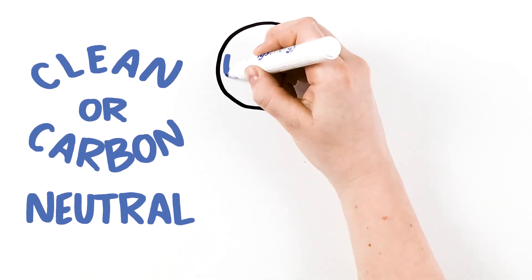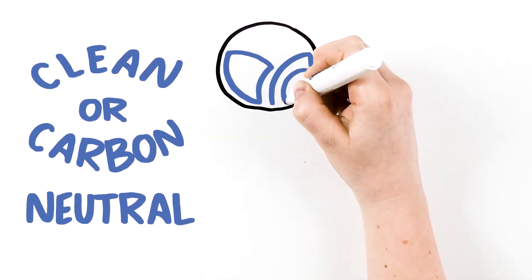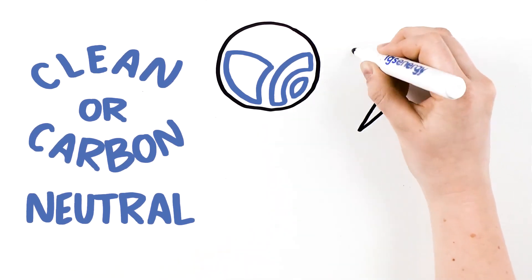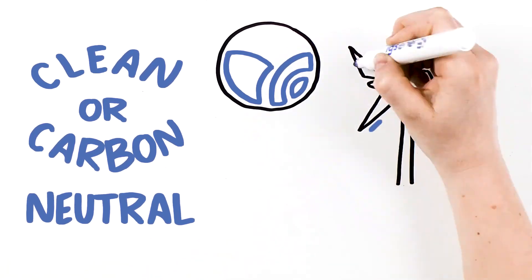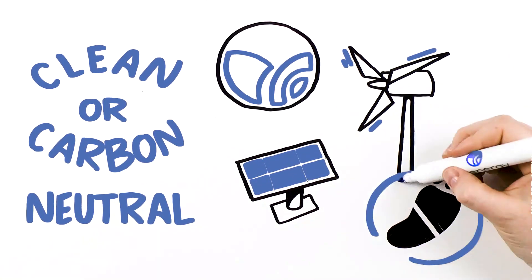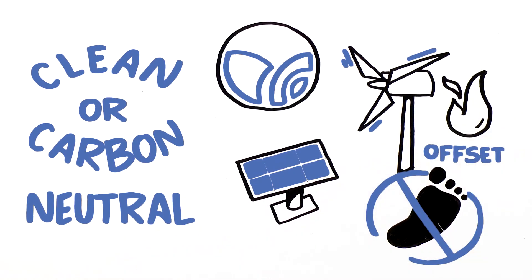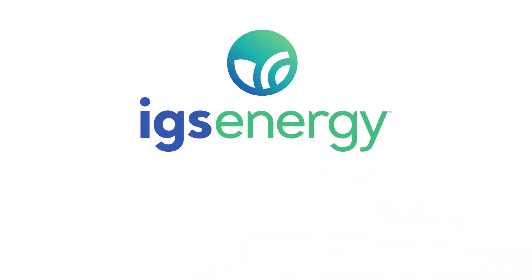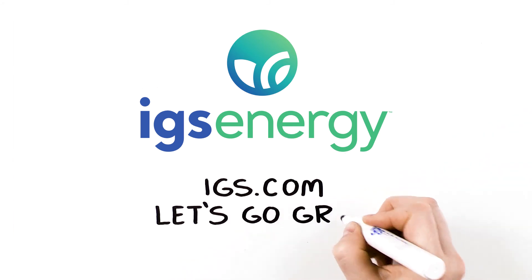At IGS Energy, we know we all have a role to play in fighting climate change. That's why our electricity is generated using renewable resources like wind and solar power, and we help you reduce your carbon footprint with natural gas using offsets. If you'd like to power your home with planet-friendly energy, visit IGS.com. Let's go green for good.